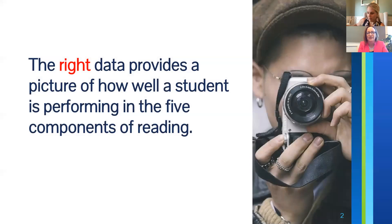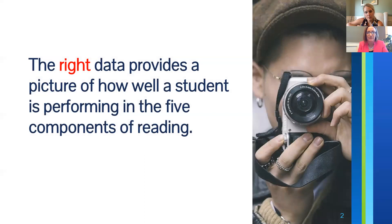One of the things we know is that the right data provides a picture of how well a student is performing in the five components of reading. We know those components are phonological awareness, phonics, vocabulary, fluency, and comprehension, as described by the National Reading Panel. Our state dyslexia law also says that we need to have those quick checks and then be able to intervene on the characteristics of dyslexia, which includes those five components of reading.